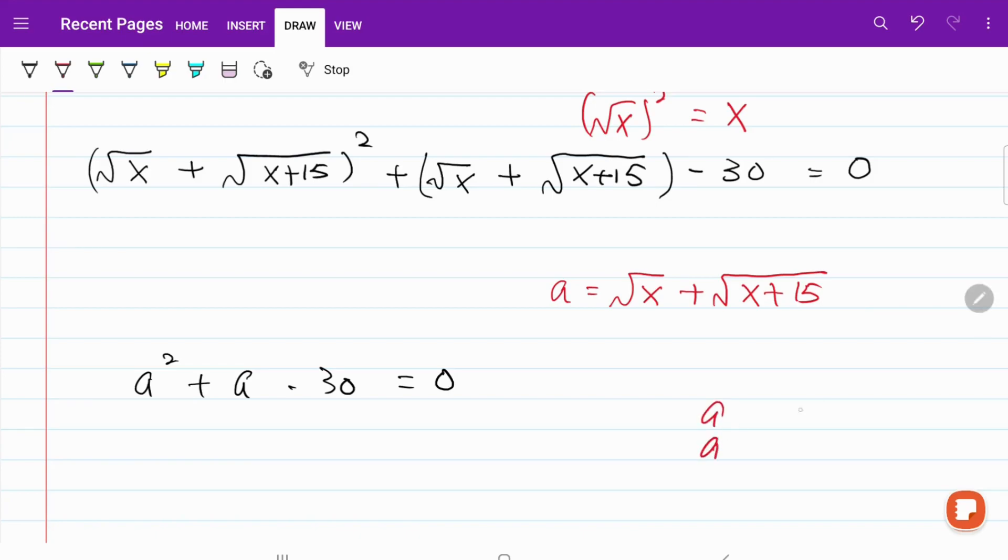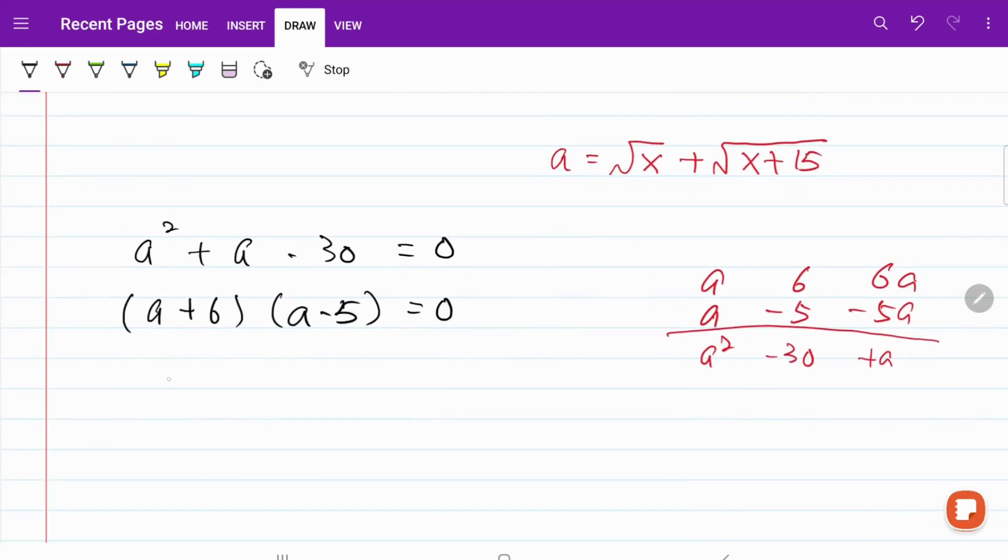I have 6 negative 5, 6a minus 5a, a squared minus 30 plus a. So our quadratic equation now becomes a plus 6, a minus 5 equals to 0. Let's go ahead and consider our first possible answer. a plus 6 equals to 0, a equals to negative 6. And this answer is going to be rejected. The reason because both square root of x and square root of x plus 15 is going to be greater or equal to 0.